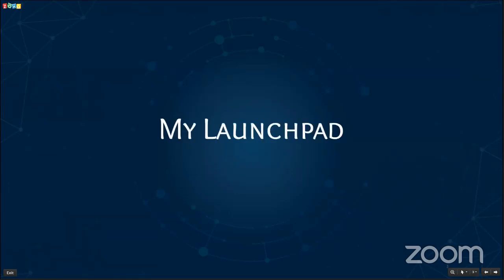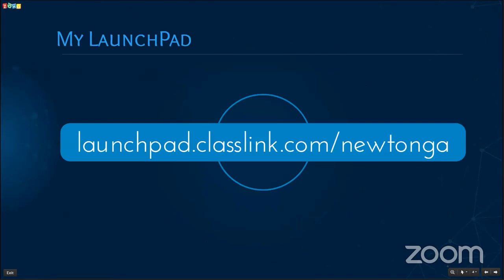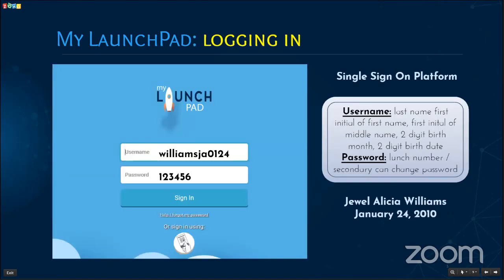First up, My Launchpad. My Launchpad is our single sign-on portal. If you have had a child in our school system last year, you are probably familiar with an SSO such as Clever. This year we're no longer using Clever — we're using My Launchpad. If you are using an NCSS-issued device, when you first log into your machine, My Launchpad is the landing page. If you aren't using an NCSS-issued device, go to launchpad.classlink.com/NewtonGA.